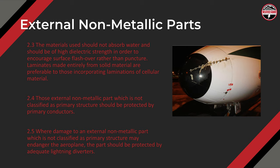What they're saying is that even for secondary structures — fairings, covers, things of that sort — we design them such that we provide primary current paths on them. We don't just discard them as completely sacrificial. We're going to provide some means of carrying the current ideally. AMC section 2.5 states: where damage to an external non-metallic part which is not classified as primary structure may endanger the airplane, the part should be protected by adequate lightning diverters. For example, if a large SATCOM radome on top of the fuselage is punctured by a lightning strike and comes loose and hits the vertical tail structure, that could be catastrophic, so diverters are required.